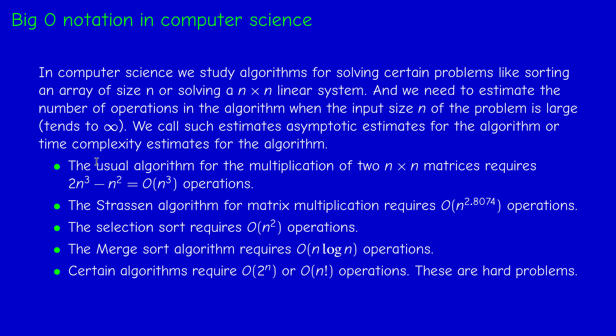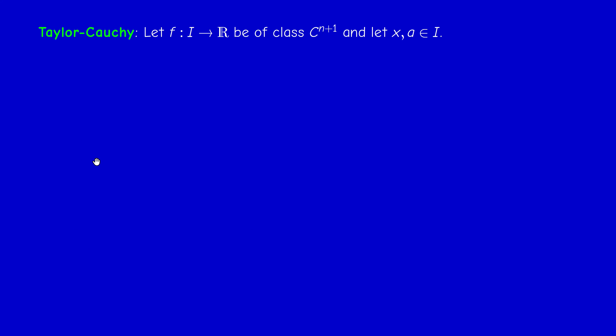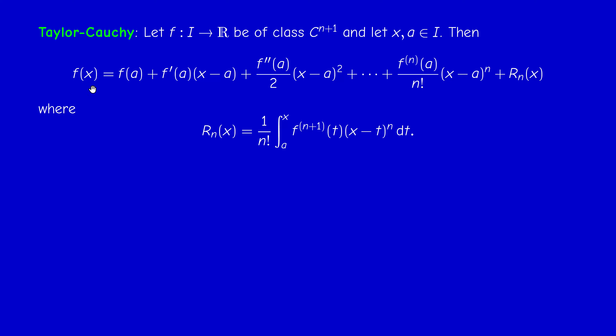Now let us go back to Taylor's approximations. I will state them first without proof and then prove them. Taylor-Cauchy (Taylor with integral remainder): given f of class C^{n+1}, for two points x and a in the interval, we can write f(x) as a Taylor polynomial of order n in x — denoted T_n(x) or P_n(x) — plus a remainder R_n, where R_n = (1/n!) ∫_a^x (x−t)^n f^{(n+1)}(t) dt.